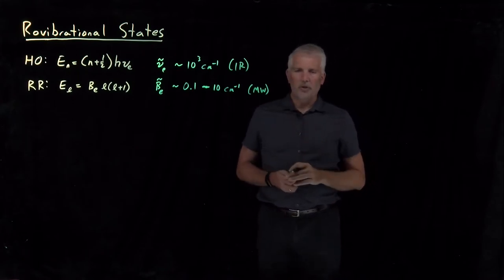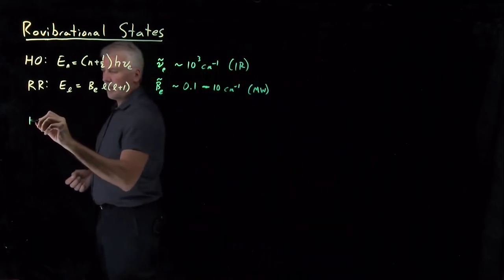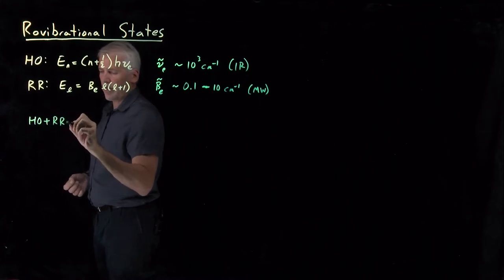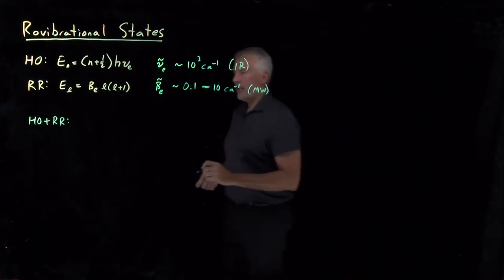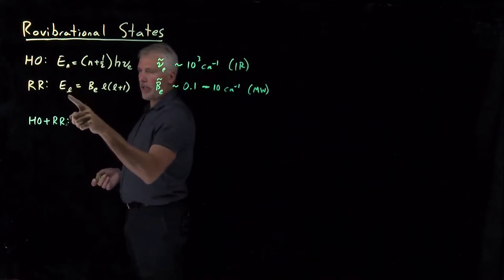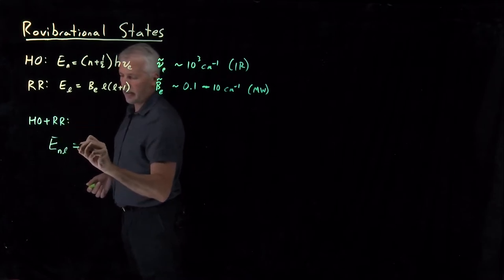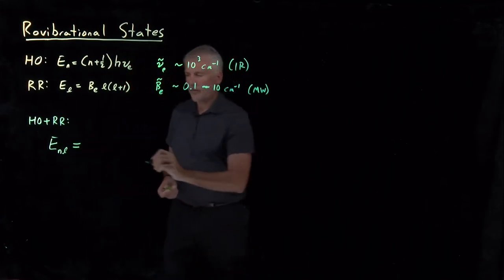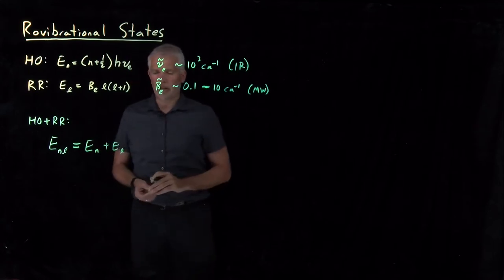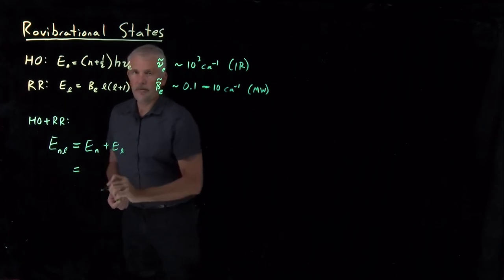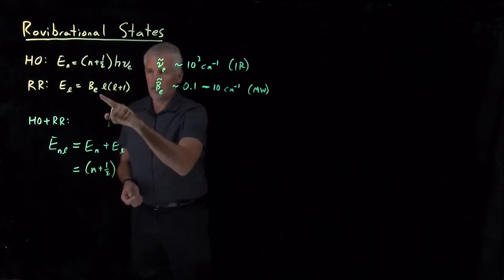Real molecules both vibrate as well as rotate at the same time. Rather than just treating them one at a time, we can consider the possibility that a molecule is vibrating and rotating simultaneously, in which case it will have a vibrational quantum number and a rotational quantum number — an angular momentum quantum number. We can say that the total energy, composed of the vibrational contribution and the rotational contribution, is just the sum of those two terms.